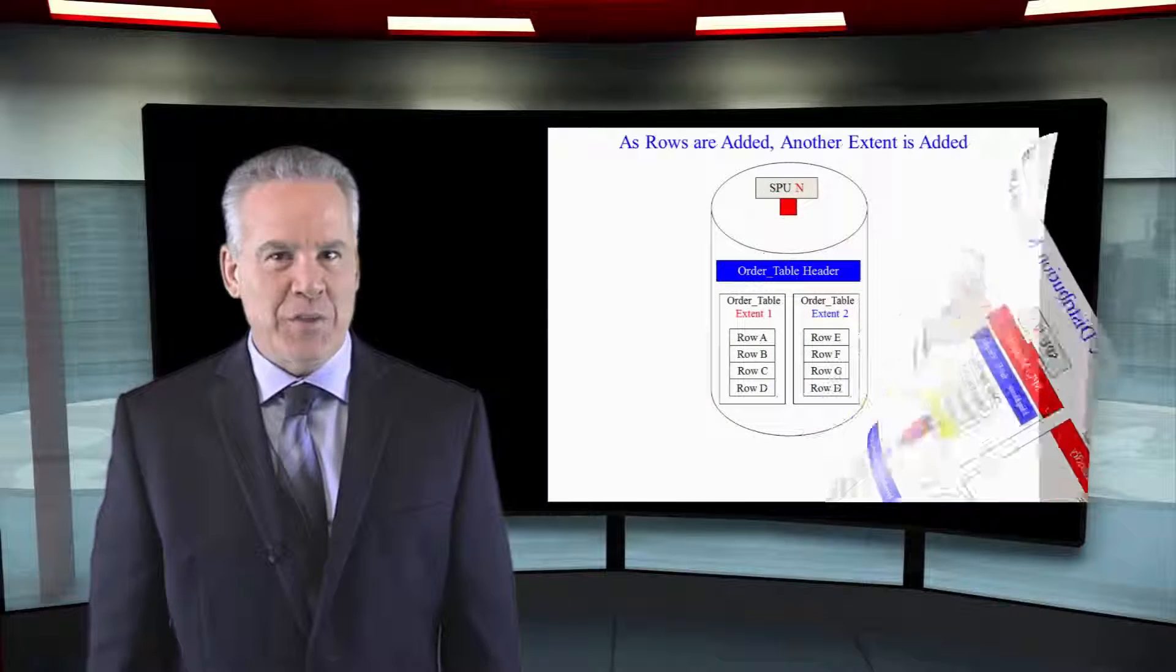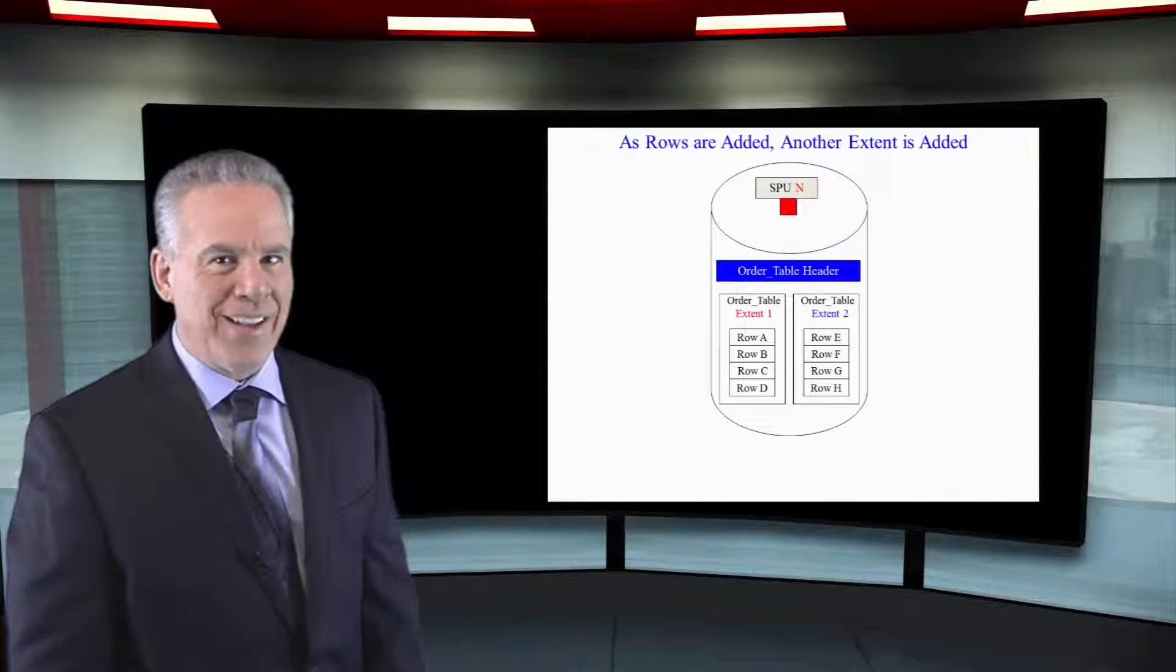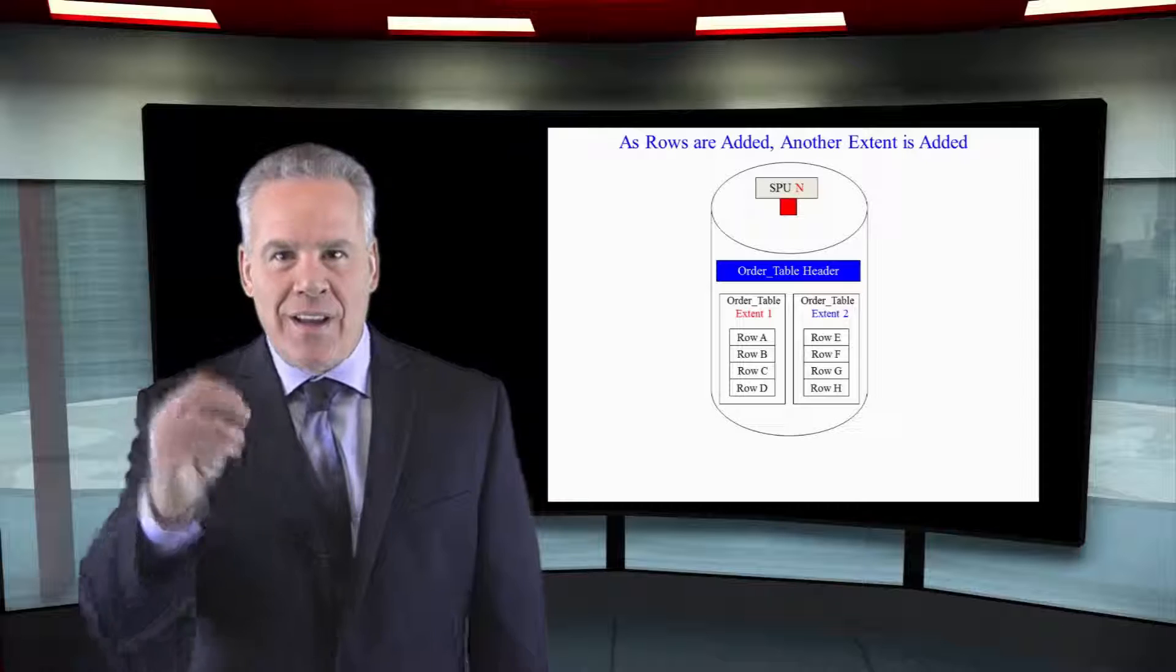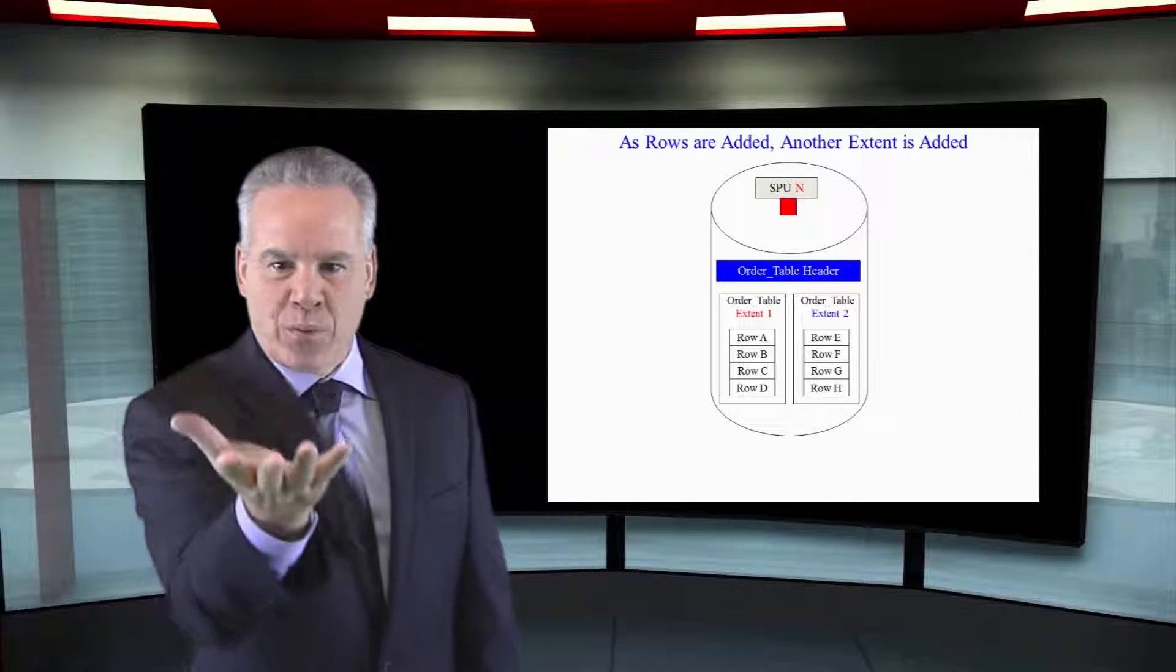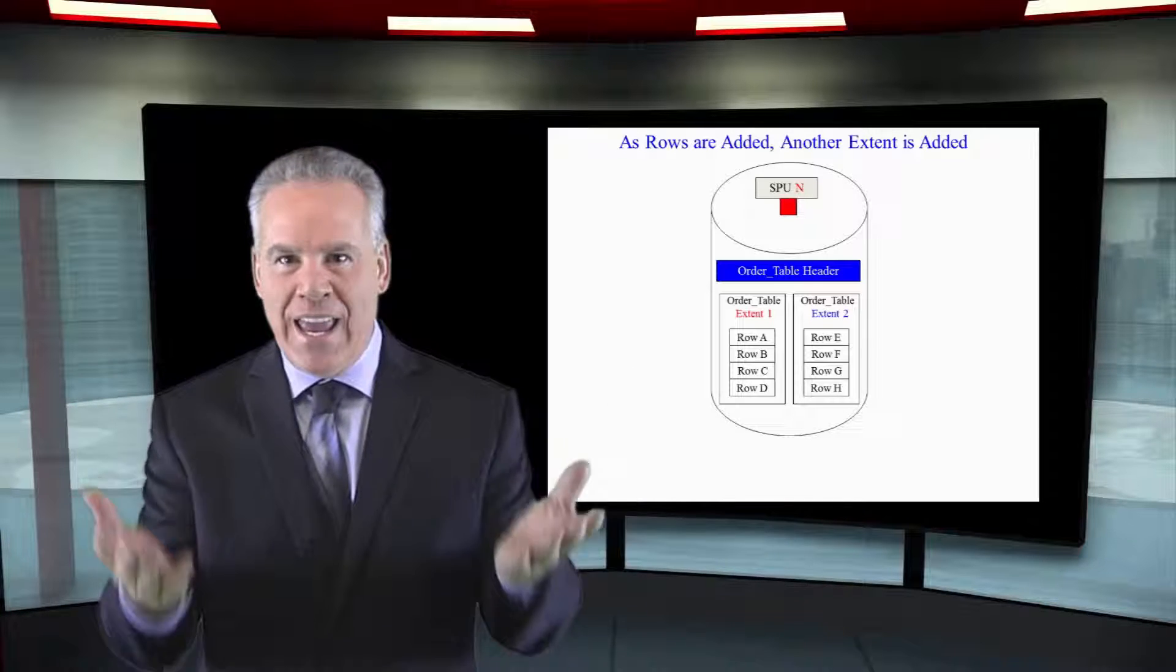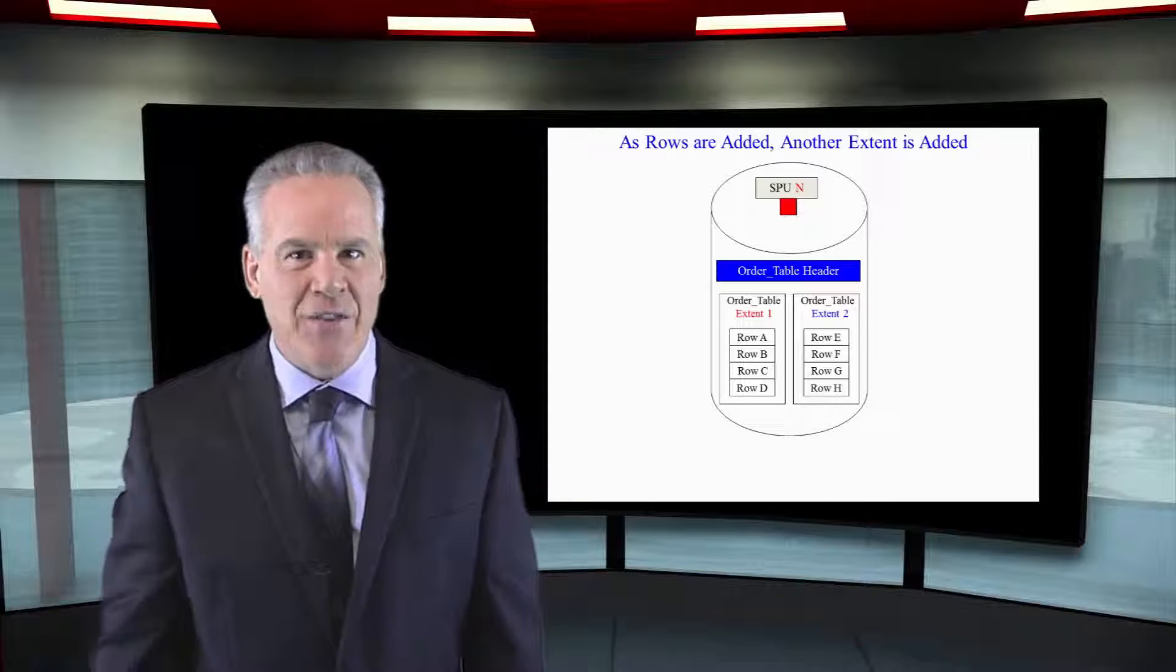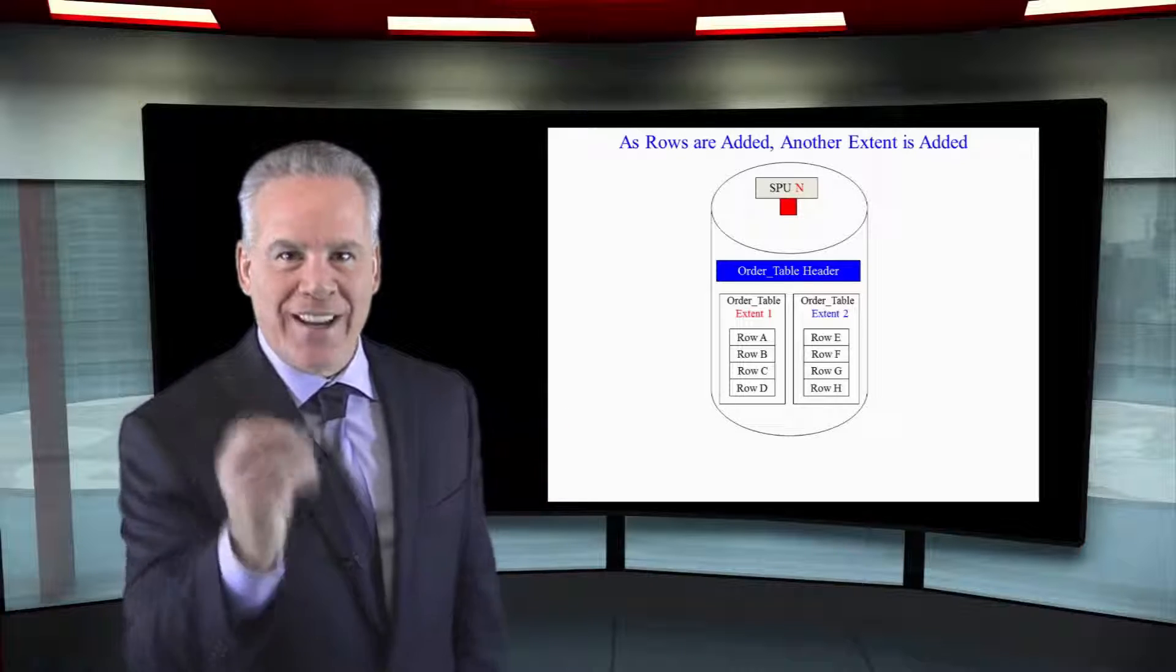If you've learned some things from me, you can see right here what's really happening. There are two extents to this table. That means they created the table, the table header was created, then they put a three megabyte extent out, and they loaded that, and then they filled it up. They said, give me three more, and then another extent was loaded. We've got two extents here, and that's how Netezza is going to grow the data, like the human body.